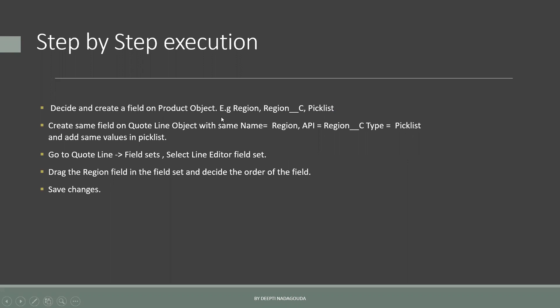Step one: decide and create a field on the product object. For example, we are going to create a 'Region' attribute for every product, so every product will have its region allocated — whether it can be US, UK, India, or anything else. The field name will be 'Region', the API name will be 'Region__c' because it's a custom field, the type will be a picklist, and the picklist will have values like India, US, UK, China, etc.